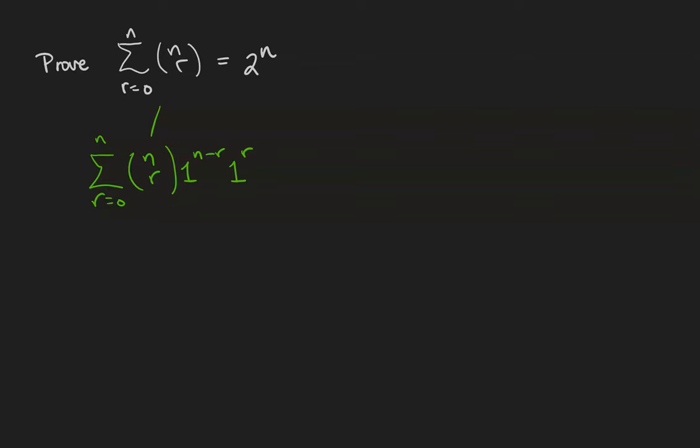According to the binomial theorem, this is just 1 plus 1 to the nth power. In other words, we're using the binomial theorem where x and y are both equal to 1. Of course, 1 plus 1 is 2 and that completes the proof.